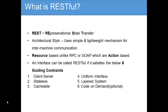Finally, the optional constraint is code on demand, which means clients should be allowed to write code on demand. REST allows client functionality to be extended by downloading and executing code in the form of applets or scripts. This simplifies clients by reducing the number of features required to be pre-implemented. This constraint is not mandatory. For an interface to be called RESTful, it must follow at least the five mandatory constraints; if any of these are not followed, that interface cannot be called RESTful.